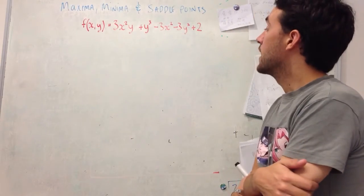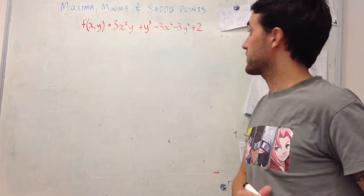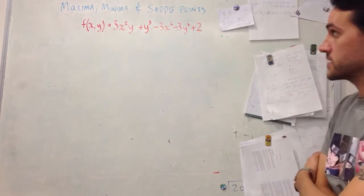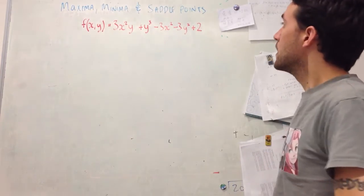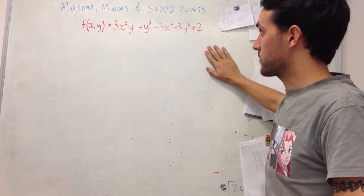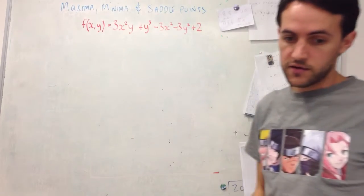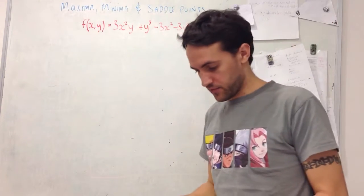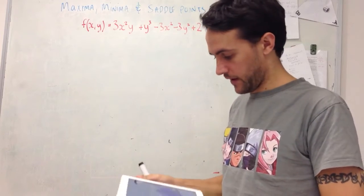I'll quickly go through an extra example of finding the maxima, minima and saddle points — similar to question 6 on your assignment. We've got this function of x and y, essentially a two-variate function. If we quickly just plot this, it looks like this.